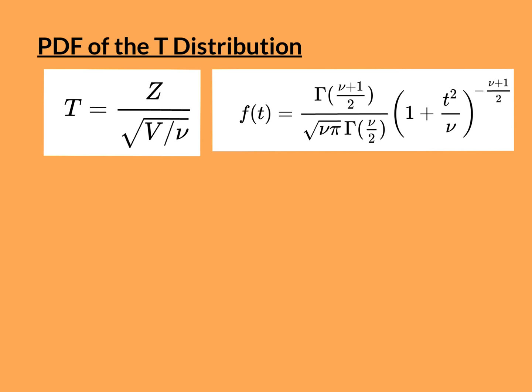Some prerequisites you'll need to know in order to follow along: you need to know double integration, in particular how to double integrate over Cartesian coordinates and how to change that to polar coordinates. In addition, you need to understand what the gamma function is — it appears twice in the PDF of the T-distribution. You'll also need to be familiar with the chi-squared distribution of nu degrees of freedom, defined as the sum of nu squared standard normals, and that it comes out as a special case of the gamma distribution.